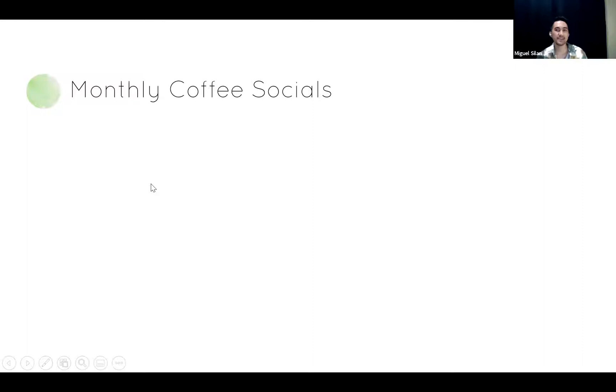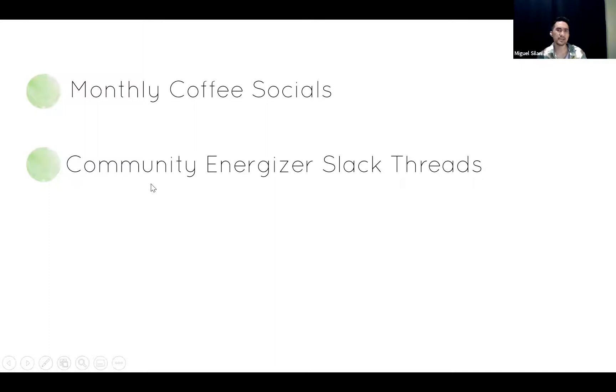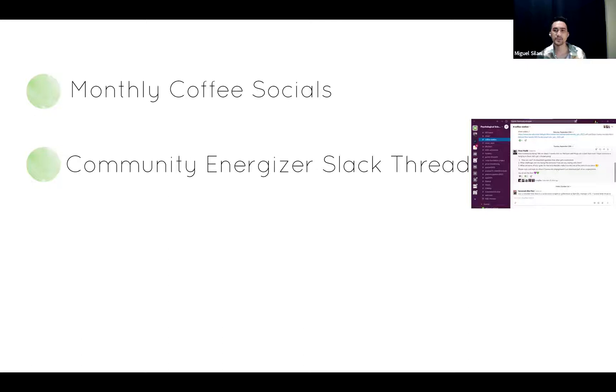For community engagement, there are monthly coffee socials on Zoom or Gather Town where members across the network, both new and old and across the globe, get to meet in an informal space and get to know each other better. There are also community energizer Slack threads that are like coffee socials in written form, covering topics like research failures, why people stay in the reform movement, and so on. These energizer threads have been picked up by Peter Malik.